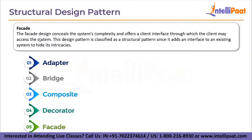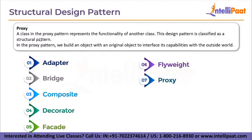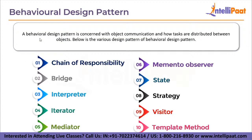The facade design conceals the system's complexity and offers a client interface through which the client may access the system, adding an interface to an existing system to hide its intricacies. The flyweight pattern is mostly used to reduce the number of objects formed and reduce memory footprint; it attempts to reuse previously existing similar objects by storing them before building a new one. In the proxy pattern, a class represents the functionality of another class, building an object with an original object to interface its capabilities with the outside world.